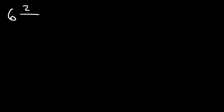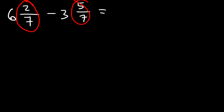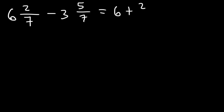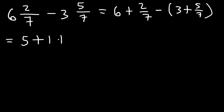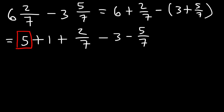Now let's try a similar but slightly different problem — subtracting two mixed numbers where subtracting 2 over 7 by 5 over 7 gives a negative result, so we'll need to do something different. Let's begin by expanding everything: 6 plus 2 over 7, minus 3 plus 5 over 7. We're going to borrow a 1 from 6, rewriting it as 5 plus 1, and then distribute the negative sign to get minus 3 minus 5 over 7.